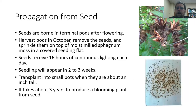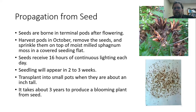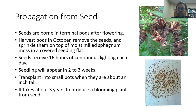Azaleas can also be propagated from seed. Seeds form on the terminal pods after flowering and you want to harvest those in October. Tap them out onto a piece of paper to collect them, then sprinkle them onto sphagnum moss or peat moss in a seedling flat. They need to receive continuous light and you'll start to see seedlings come up. It's going to take about three years to develop a good blooming plant from seed, but it's a really interesting thing to do and you can have a lot of fun with it.